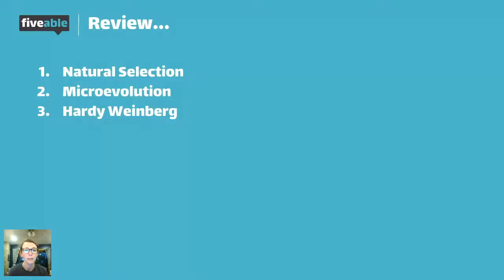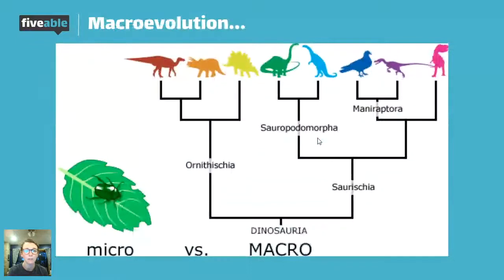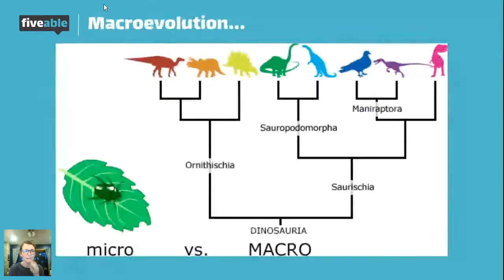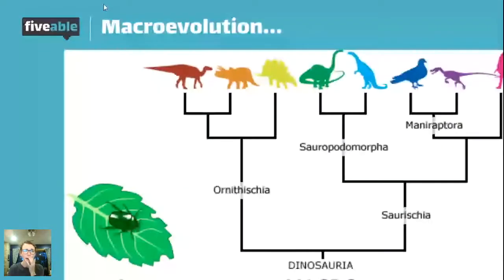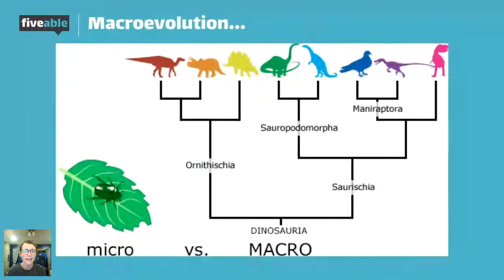What we're going to be talking about is macroevolution, and I have this graphic to help depict that. Macroevolution is large-scale — macro means large, micro means small, like microscope.